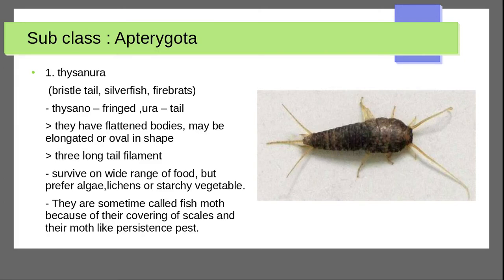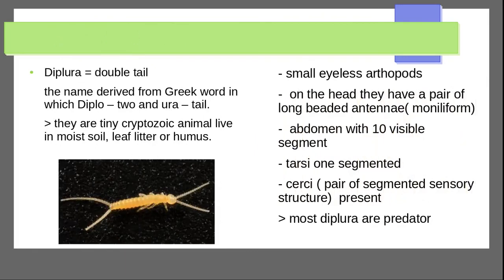Bristletails and silverfish are sometimes called fish moths because they are covered in scales and show moth-like persistence. Another order is Diplura. The name Diplura is derived from Greek: 'diplo' meaning double, and 'ura' meaning tail. They are tiny cryptozoic animals living in moist soil, leaf litter, or humus — cryptozoic meaning they live in hidden, dark locations.